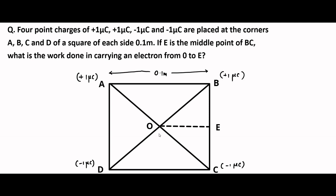Now, for taking a charge from an initial point to a final point, we remember the formula: work done in taking a charge Q from an initial point I to a final point F is equal to that charge multiplied with the final point potential minus the initial point potential — basically, the potential difference between the final and initial point. So the work done in carrying an electron from point O to point E is equal to electronic charge Q_E into V_E minus V_O.